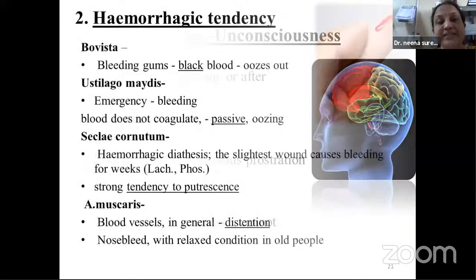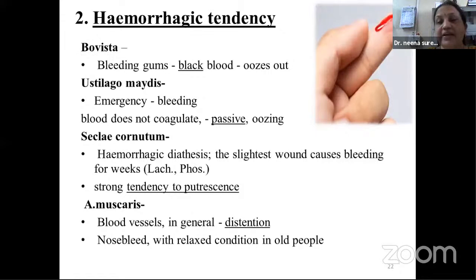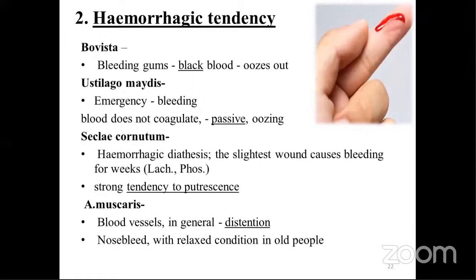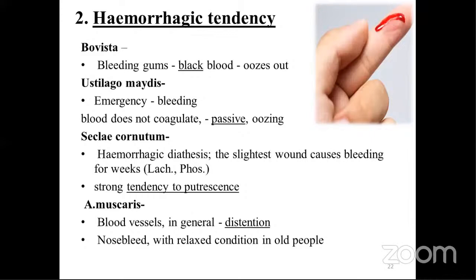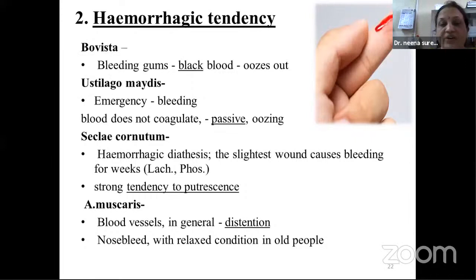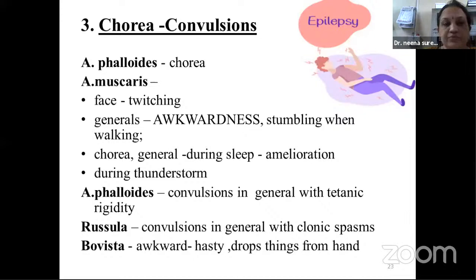Hemorrhagic tendency: Bovista shows black, passive hemorrhage with presence of clots — bleeding from gums with dark blood oozing out. Ustilago has emergency bleeding where blood does not coagulate and is passive in nature. Secale cornutum is number one remedy during labor where there is hemorrhagic diathesis — the slightest wound causes bleeding for weeks, like Lachesis, Phosphorus, etc.